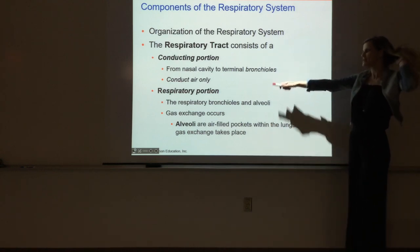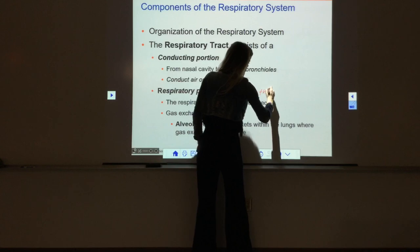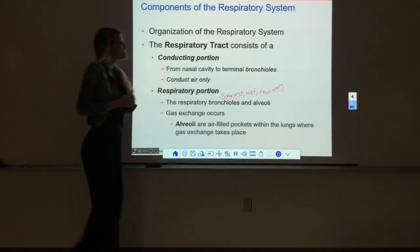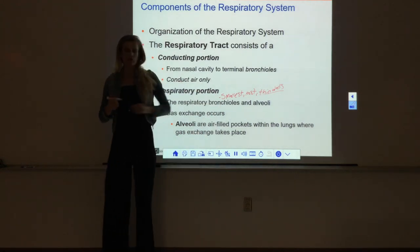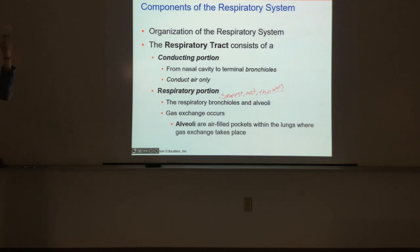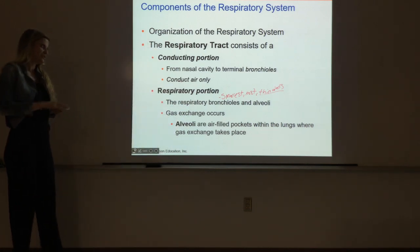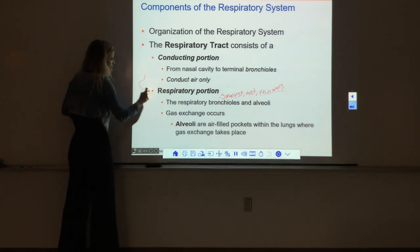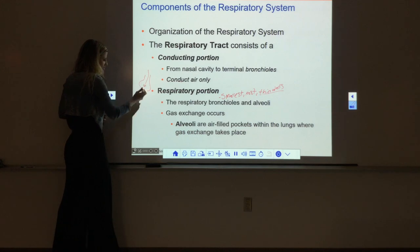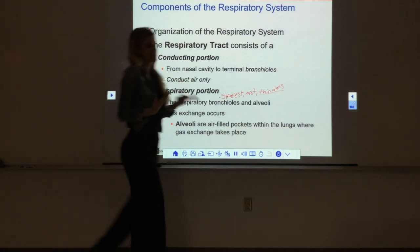The respiratory portion includes the respiratory bronchioles - our smallest last bronchioles with really thin walls - and then the alveoli themselves. In these areas, actual gas exchange can occur. The walls of the respiratory bronchioles are thin enough for gases to actually cross them, so we can exchange oxygen and CO2 across their walls - that's why we include them in the respiratory portion. The alveoli are the last little air-filled sacs, the end of the line for the respiratory tract, where most of our gas exchange takes place.